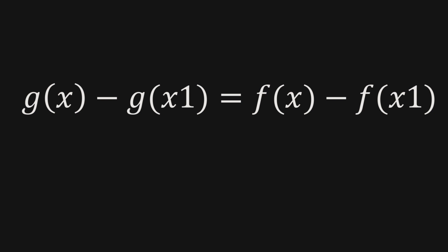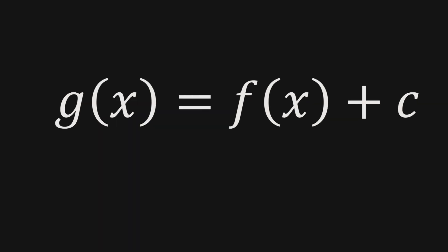And now we're going to find the relationship between g of x and f of x. Well, the only way that this equality is going to be maintained is when g of x equals f of x plus c. Because then plus c and minus c are going to appear and they're going to get cancelled and the equality is going to be maintained.